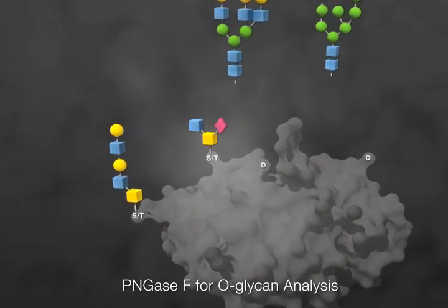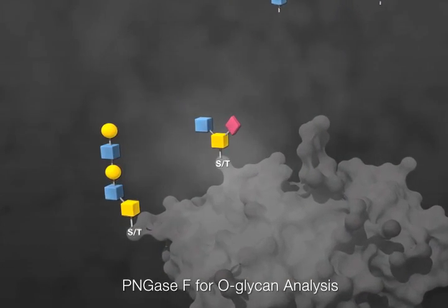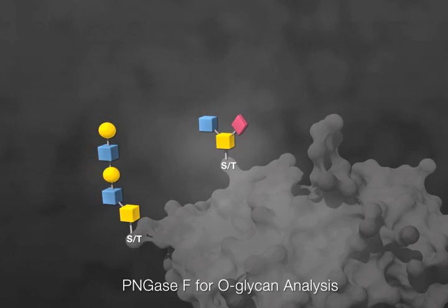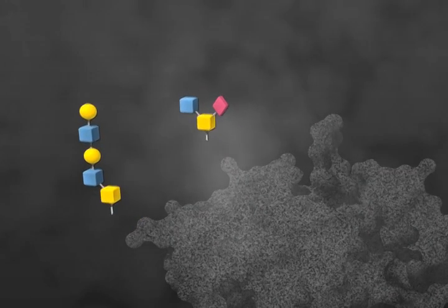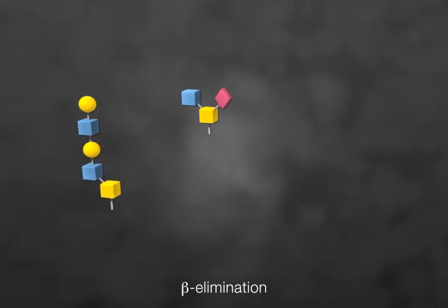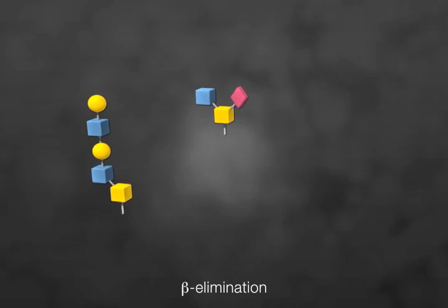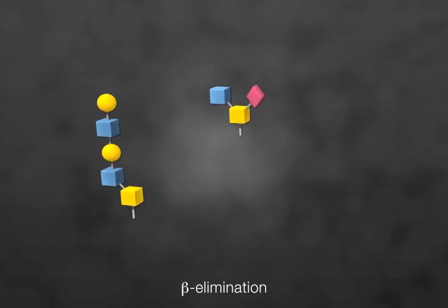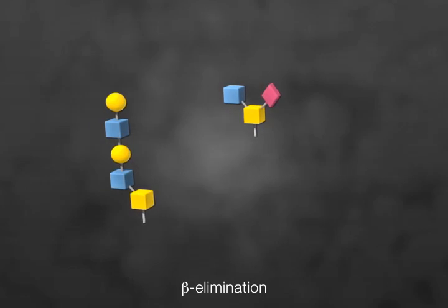One application for PNGase F is to remove all N-glycans, leaving the protein ready for O-glycan isolation. Alkaline chemical treatments, like beta-elimination, release O-glycans as a block for further analysis. Note that the protein is destroyed in the process.